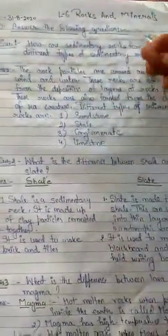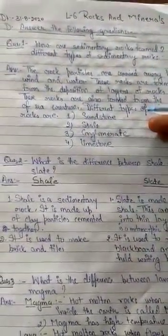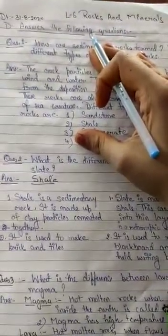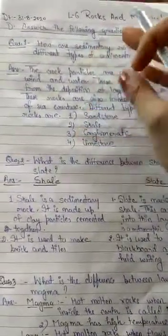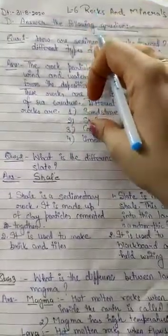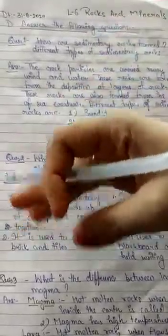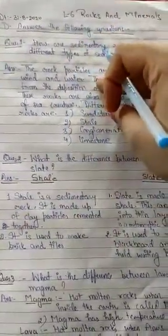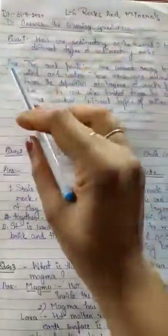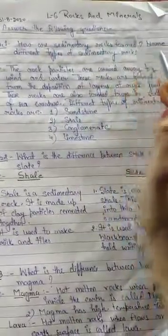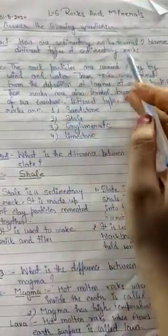Now, the important thing about this exercise is if you have missed any of the topic while explanation or if you have any confusion on any particular topic, your doubts will be cleared here because I am going to explain the question answers. So listen carefully. Question 1: How are sedimentary rocks formed? Name different types of sedimentary rocks.